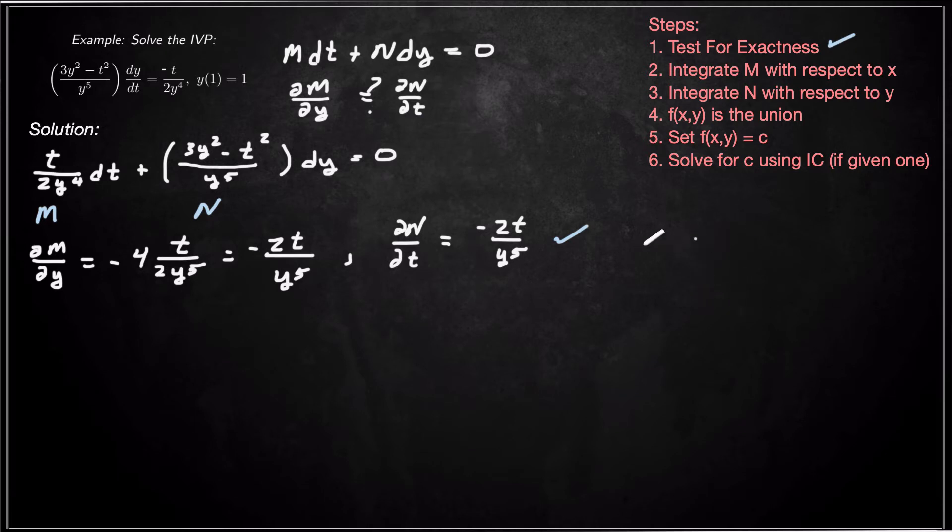Now we need to integrate M with respect to x or t. So here we should say with respect to t because we have our independent variable being t. So f of x, so f of t,y. F of t,y. The same thing here, we have a t instead of x. So f(t,y) is going to be integral of M dt.